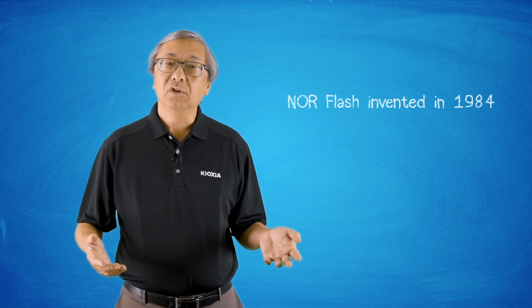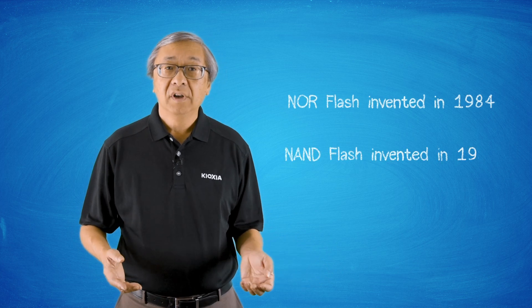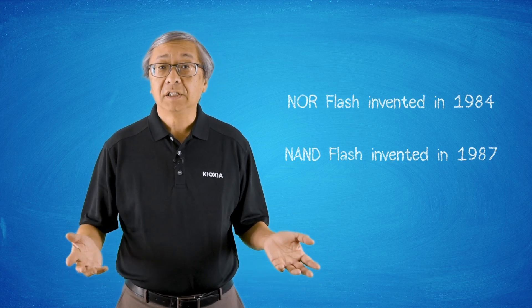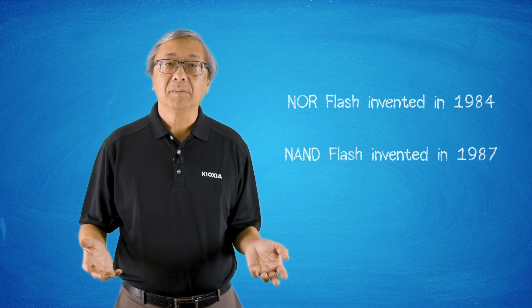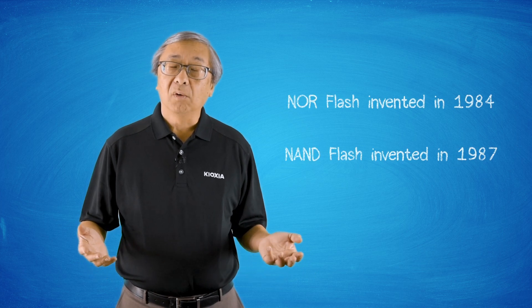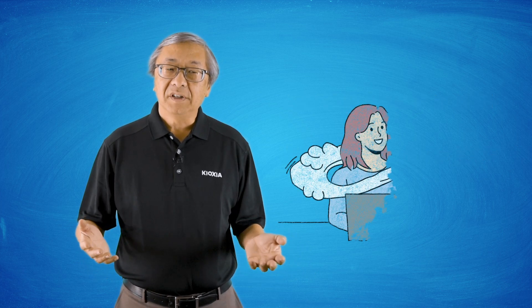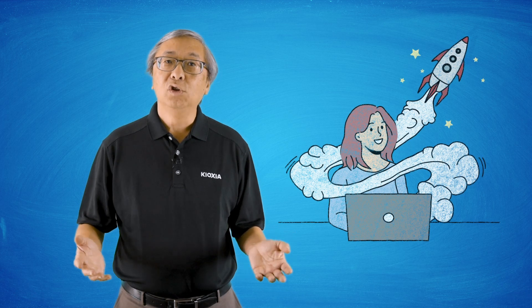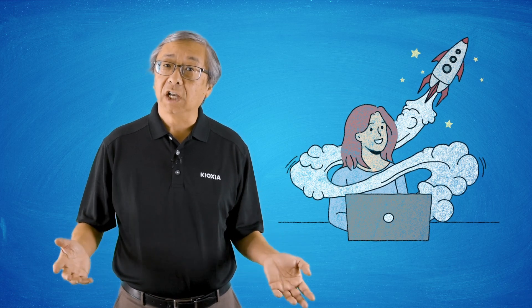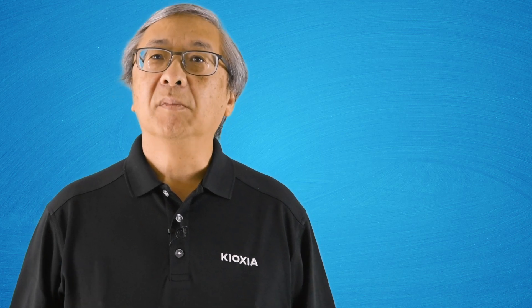So Toshiba created NOR flash in '84 and NAND flash in '87, and these types of memories are what really allowed the user to program and erase electrically in a very fast amount of time. That eventually became the least expensive type of non-volatile memory, and that was when the dream of this non-volatile mass storage memory finally became realized.